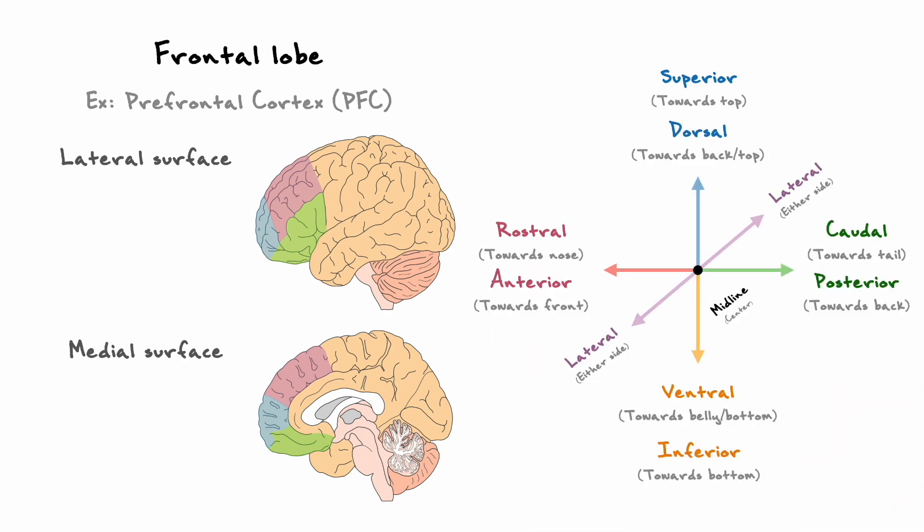Anyhow, the prefrontal cortex is divided in different regions that are named based on the navigation system we covered. On the lateral surface, the top portion is called the dorsolateral prefrontal cortex because it is on the dorsal side and on the lateral surface. By the same logic, the region below in green is the ventral lateral prefrontal cortex and the region in blue is the lateral frontal polar cortex.